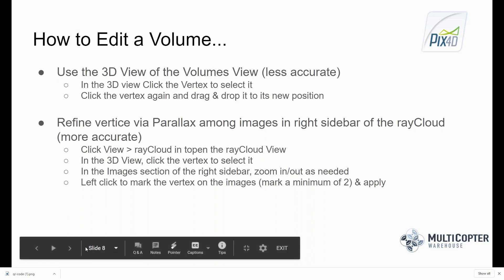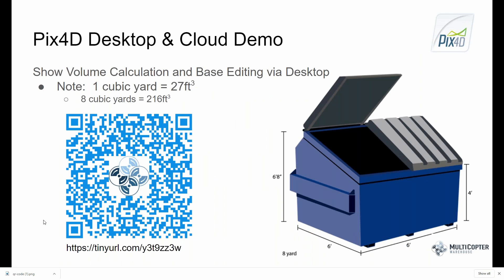On screen is a QR code and a TinyURL that takes you to a project I uploaded to the PIX4D cloud. One cubic yard equals 27 cubic feet, and eight cubic yards equals 216 cubic feet. A dumpster measuring approximately 6.8 feet tall by 6 feet wide by 6 feet long with 4 feet in front has a volume of roughly eight cubic yards. We're going to see if we can replicate that volume within the project you can access via that QR code or TinyURL.